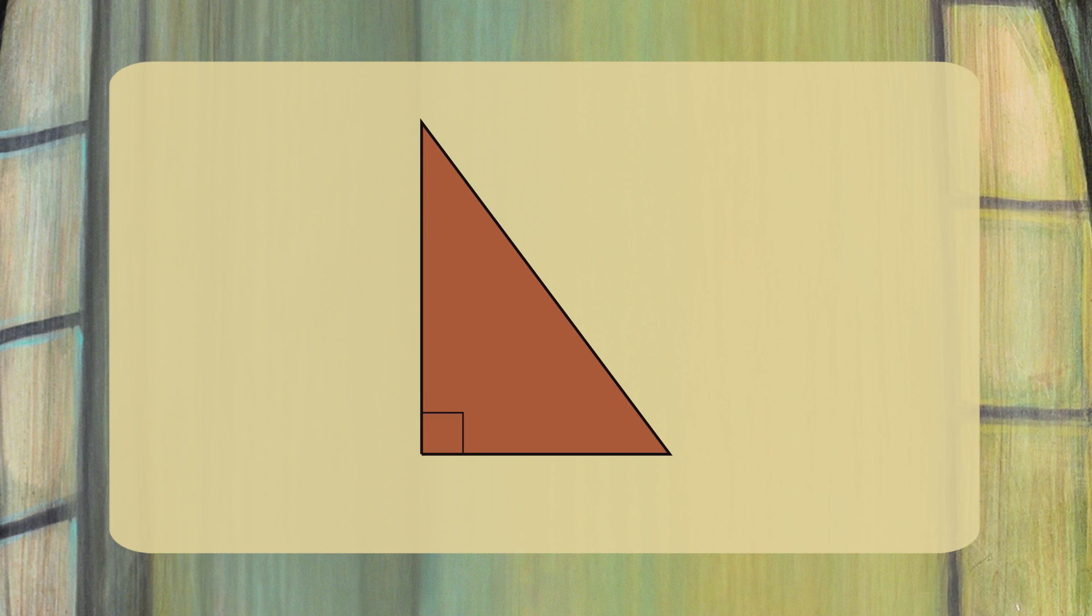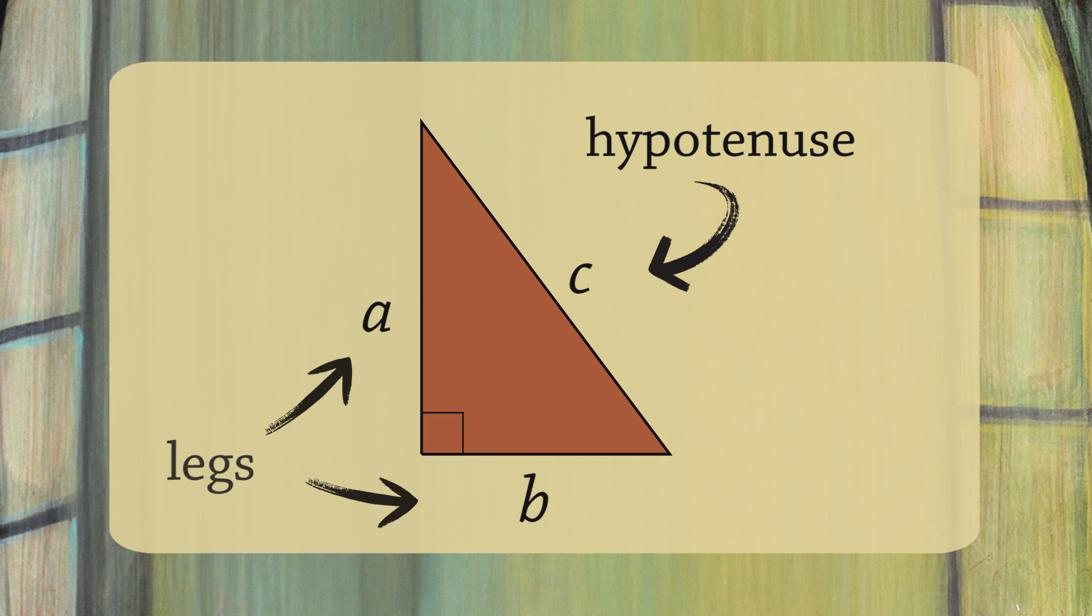Suppose you have a right triangle, a triangle with a 90 degree angle. Label the three sides A, B, and C. It's actually really important that you label the longest side C. The longest side for a right triangle is called the hypotenuse, and the other two sides are called legs.